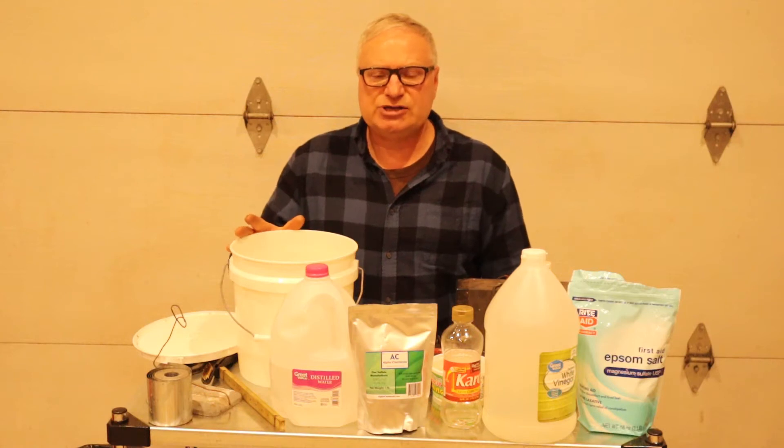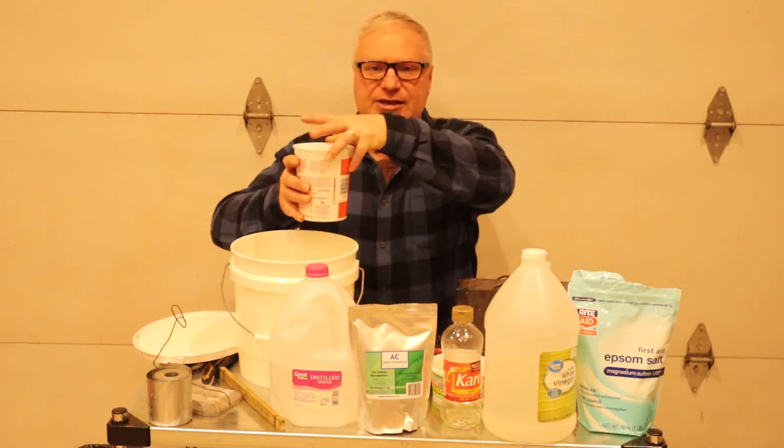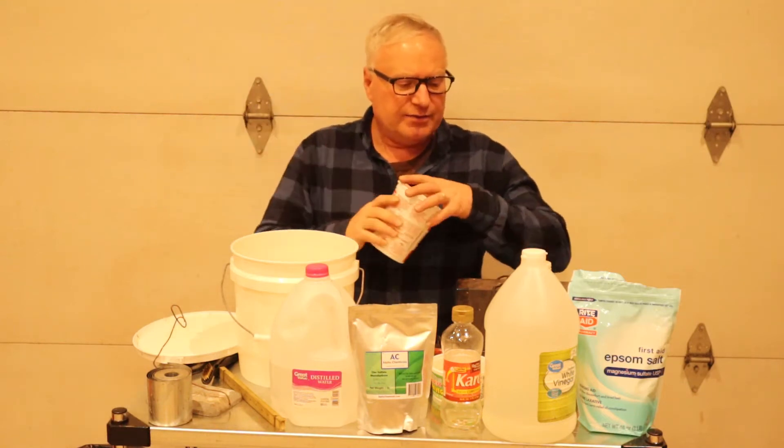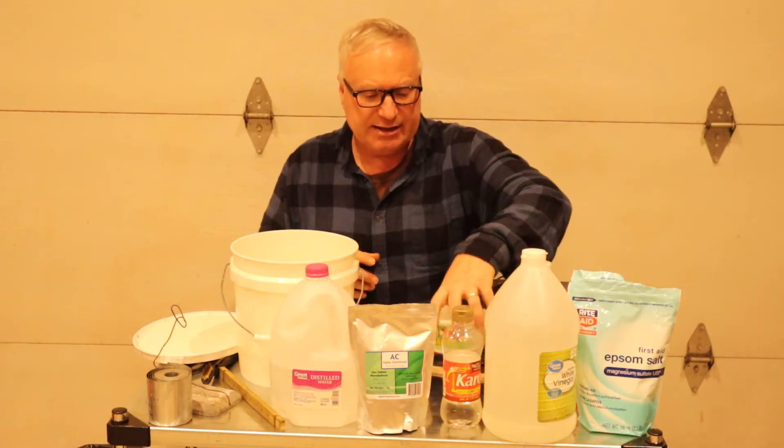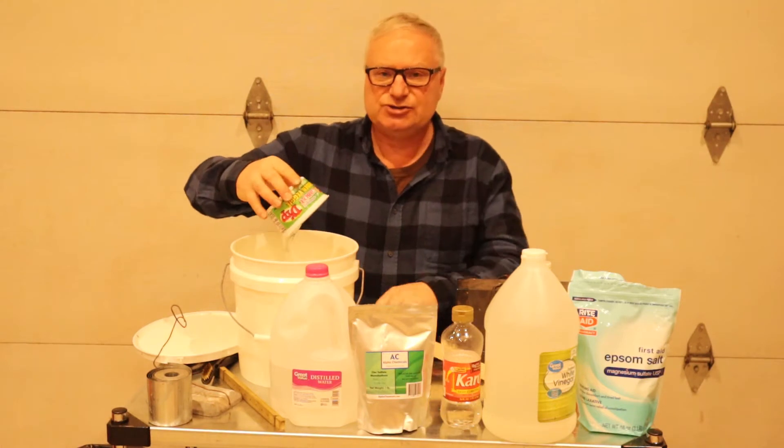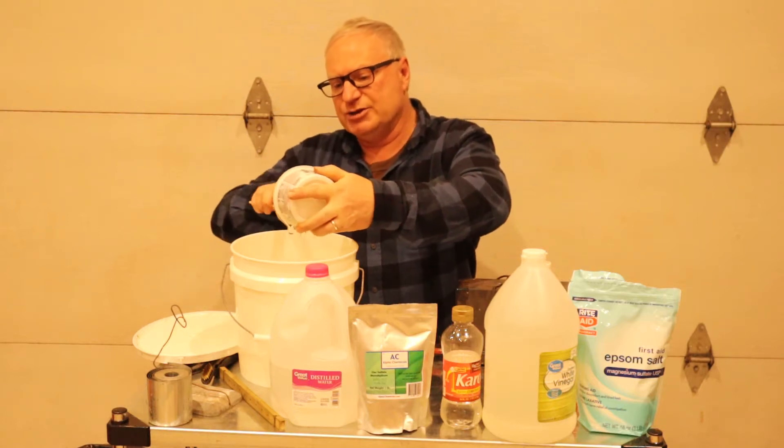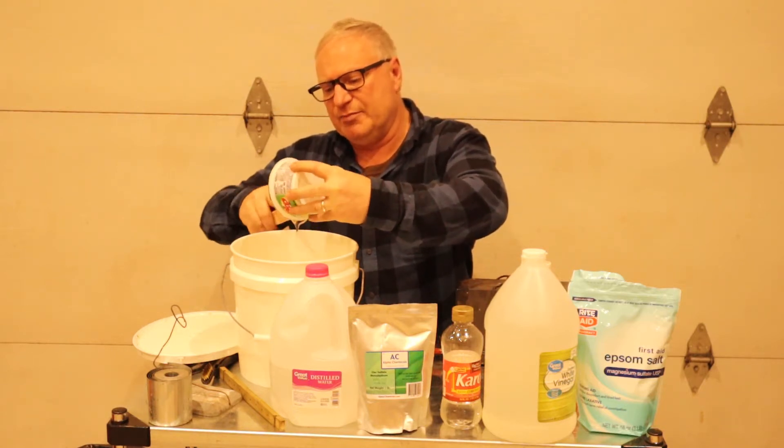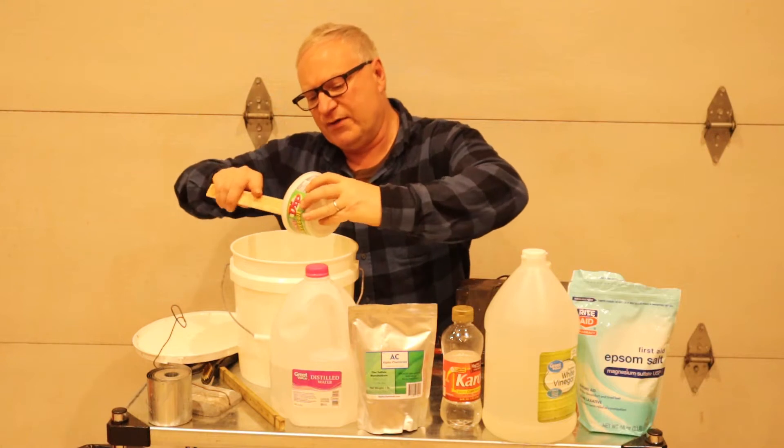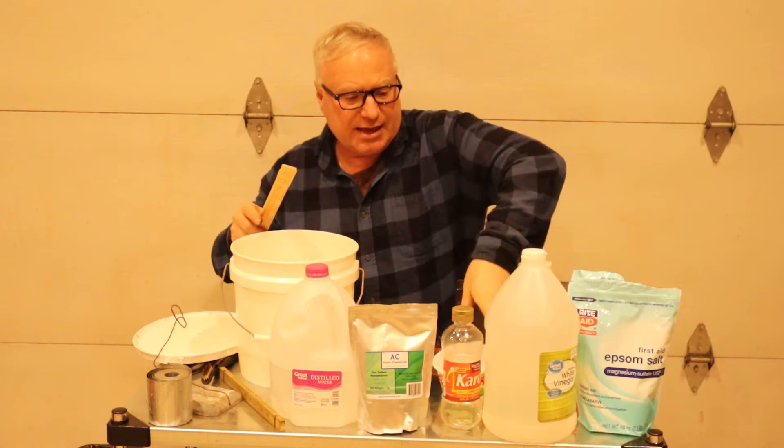First, we'll start setting up our electrolyte solution within this bucket. The first thing we're going to add is a thousand grams of Epsom salts into the bucket. Then we'll add four hundred and eighty grams of Caro syrup. Based on your bucket size, you can scale this up or scale it down. If you use the same ratios, it'll work fine.